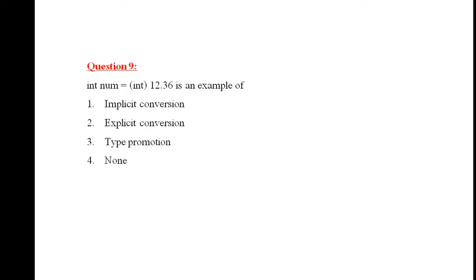Question 9: int num = (int) 12.36. You are forcing the value to be an integer type by using int in parentheses. This kind of statement is an example of explicit conversion. The right answer is number 2: explicit conversion.